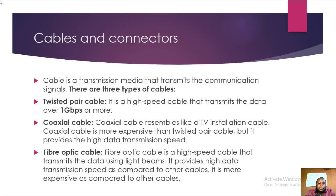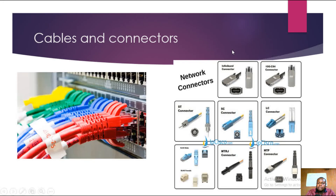A cable is a transmission media that transmits communication signals. There are three types of cables: the twisted pair cable, the coaxial cable, and the fiber optic cable. The twisted pair cable is a high-speed cable that transmits data at over one gigabit per second. The coaxial cable resembles a normal DSTV cable; it is more expensive than twisted pair but provides high data transmission speed. Fiber optic cable transmits data using light beams, provides the highest data transmission speed, and is the most expensive. You can also see the connectors connected to the switch in the diagram.